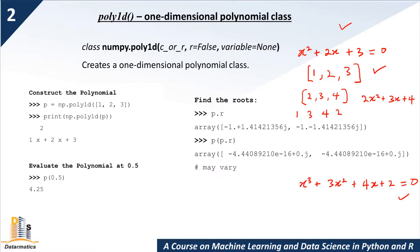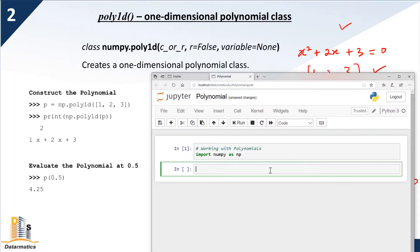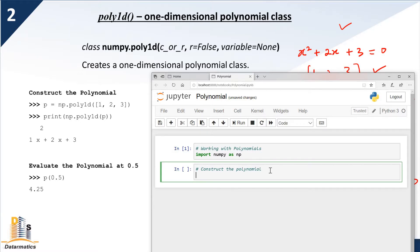Let's start with the first one — construct this polynomial. I'll open Jupyter Notebook. The first thing we want to do is construct the polynomial. You cannot write equations in exactly the same way inside Jupyter Notebook, so to do that, you write: P = np.poly1d — specify the coefficients.